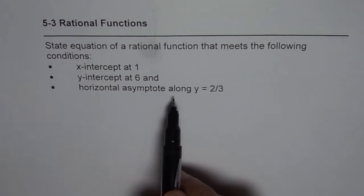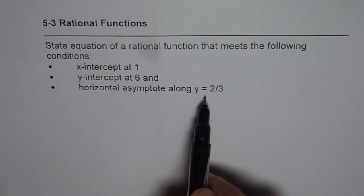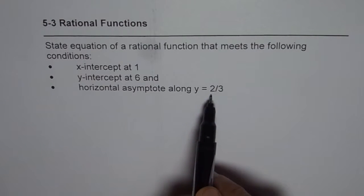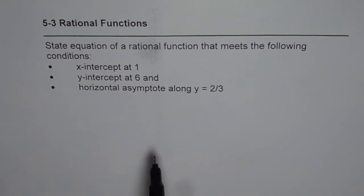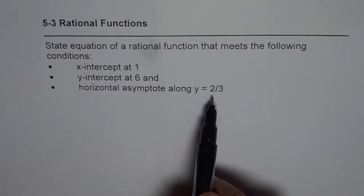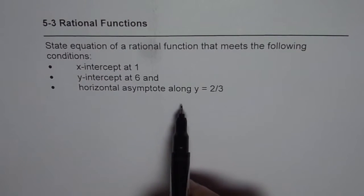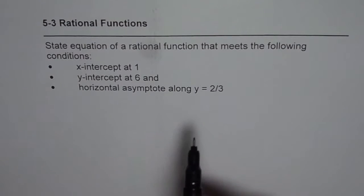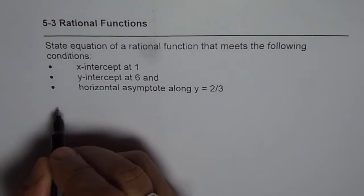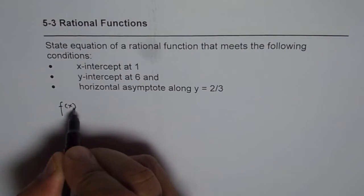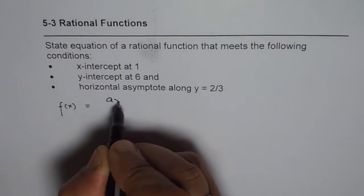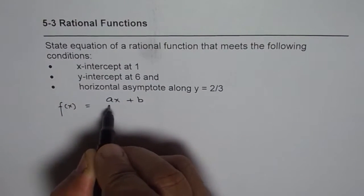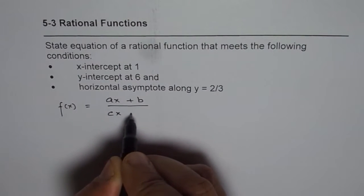Since we have a horizontal asymptote whose value is not 0 but some number, 2 over 3 in this case, we can write a rational function whose numerator and denominator have the same degrees. The simplest of those will be the function written as ax plus b over cx plus d.